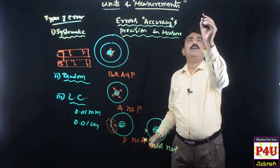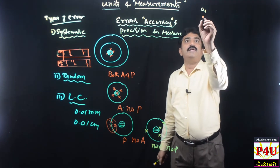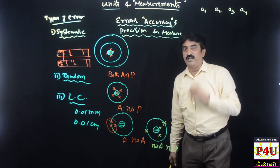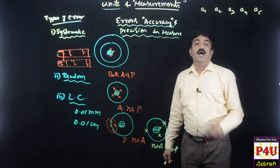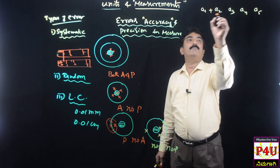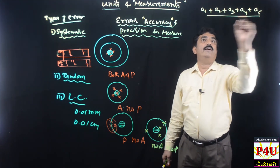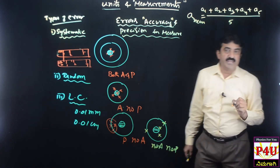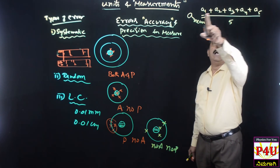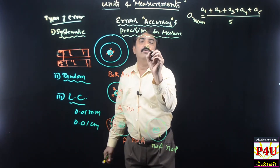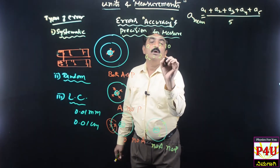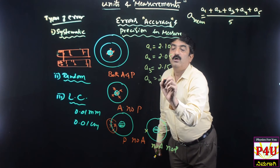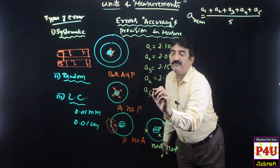Trial 1 gives first reading A1. Trial number 2 gives A2. Trial number 3 gives A3. Trial number 4 gives A4. The mean value is the average of these readings. For example: A1 = 2.10, A2 = 2.05, A3 = 2.15, A4 = 2.10, A5 = 2.20.